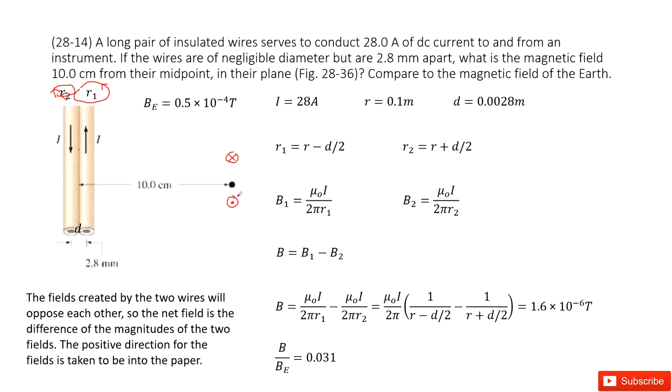Now we need to get the net magnetic field. We need to find magnitude for B1, magnitude for B2. Luckily, we know this is a magnetic field due to a long straight wire, just mu-naught i over 2 pi r.